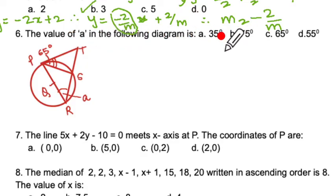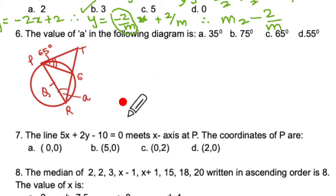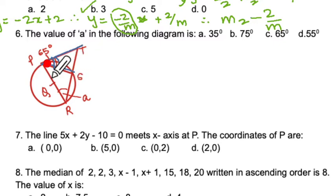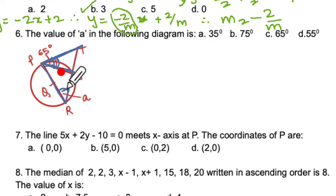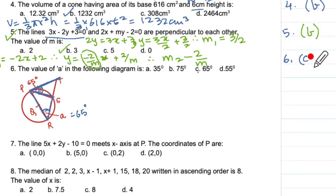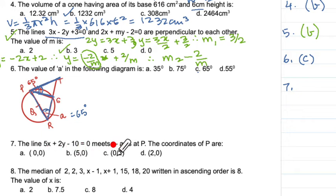Part F: find the value of angle A in the diagram. The angle shown is between the tangent and the chord. Angle A is in the alternate segment, so by the tangent-chord angle theorem it equals 65°. The answer is C — 65 degrees.